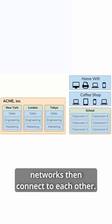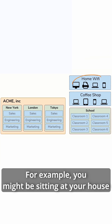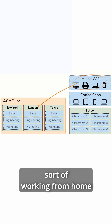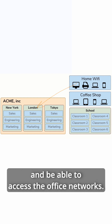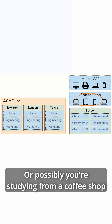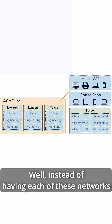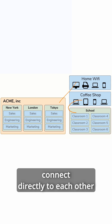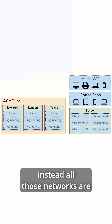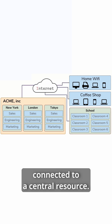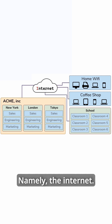All these networks then connect to each other. For example, you might be sitting at your house and might want to do some working from home and be able to access the office networks. Or possibly you're studying from a coffee shop and you might want to access school resources. Well, instead of having each of these networks connect directly to each other in every possible combination, instead all those networks are connected to a central resource, namely the internet.